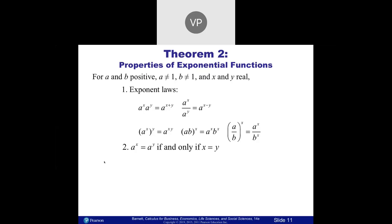Here's an important property: if you have two things equal to each other that have the same base, you can essentially cancel off the base and set the two powers equal to each other, then solve. This also works the other way: if two things equal each other with the same exponent, you can say the exponent is irrelevant and the bases have to be the same. These are both ways to simplify exponentials.